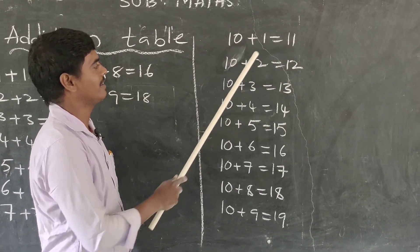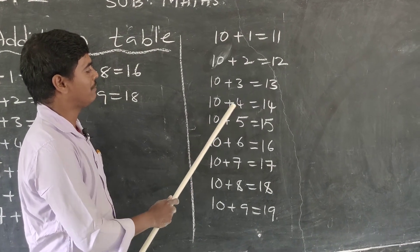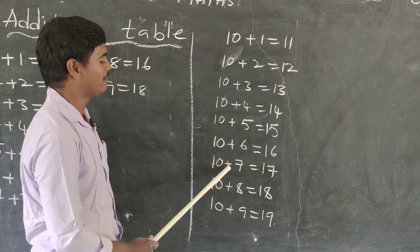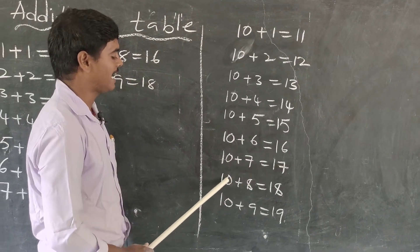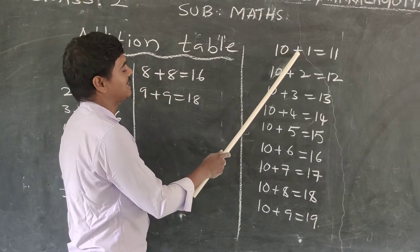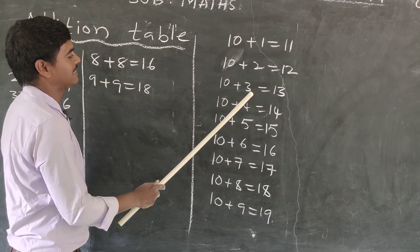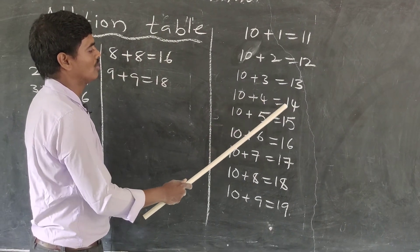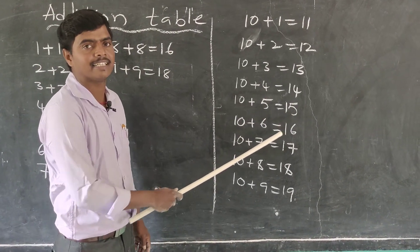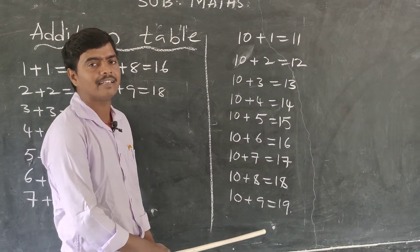Next table: 10+1=11, 10+2=12, 10+3=13, 10+4=14, 10+5=15, 10+6=16, 10+7=17, 10+8=18, 10+9=19. Read again: 10+1=11, 10+2=12, 10+3=13, 10+4=14, 10+5=15, 10+6=16, 10+7=17, 10+9=19.